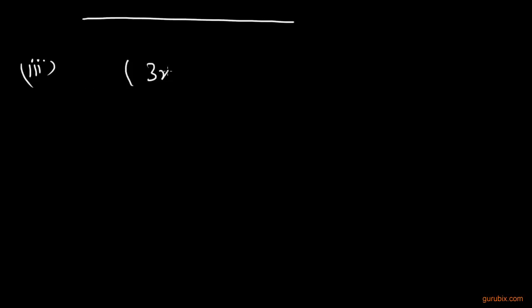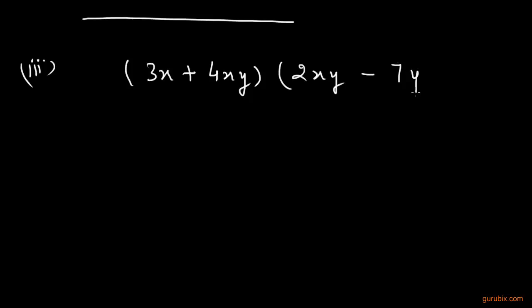Let me give you another example. If we multiply a binomial — suppose 3x plus 4xy — with another binomial 2xy minus 7y² plus 4xy, how can we multiply these binomials? This is very easy.